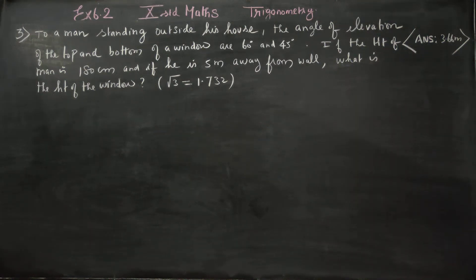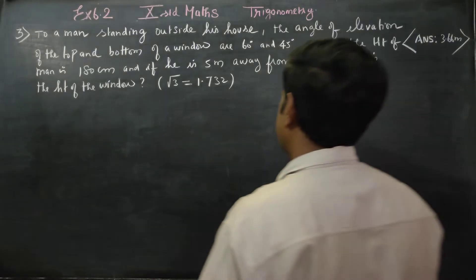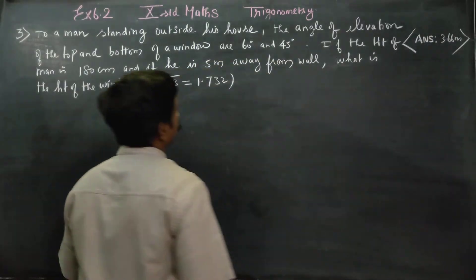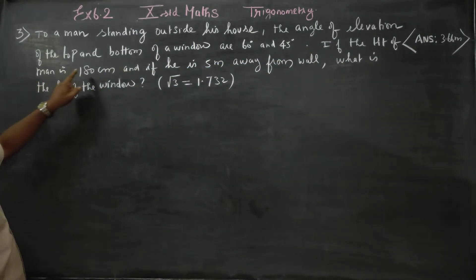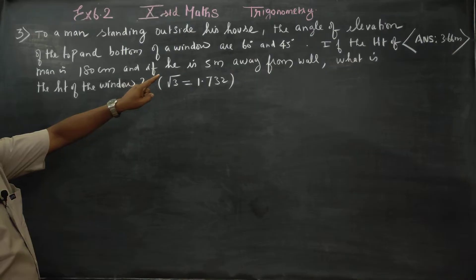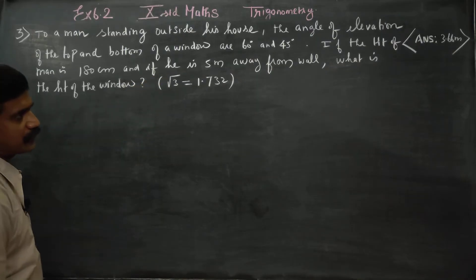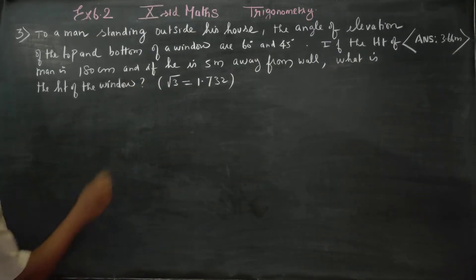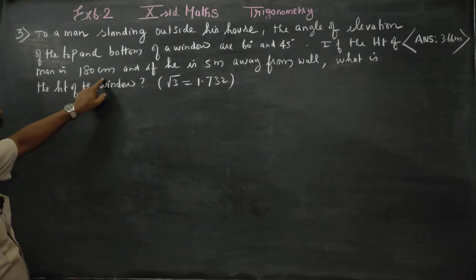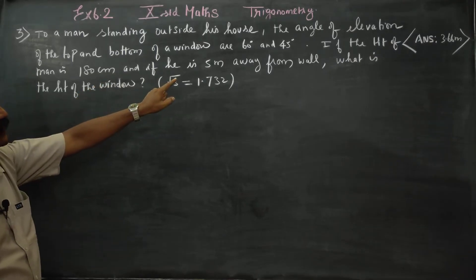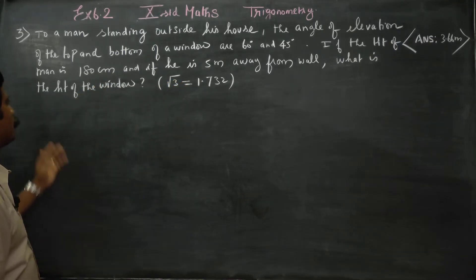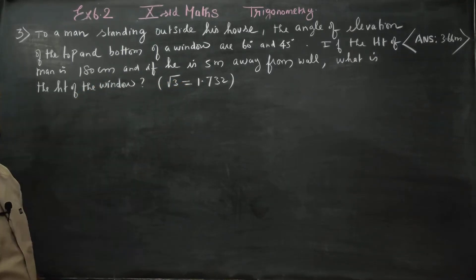Hello 10th standard students. In exercise 6.2: a man standing outside his house, the angle of elevation of the top and bottom of a window are 60 degrees and 45 degrees. The height of the man is 180 cm, and if he is 5 meters away from the wall, what is the height of the window?